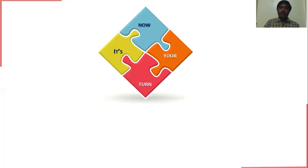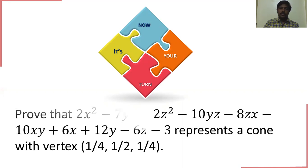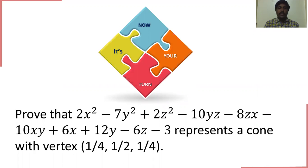We have one more problem — now it's your turn. Prove that 2x² − 7y² + 2z² − 10yz − 8zx − 10xy + 6x + 12y − 6z − 3 represents a cone with vertex (1/4, 1/2, 1/4). I hope you will gain the knowledge. Meet you in the next class. Thank you.